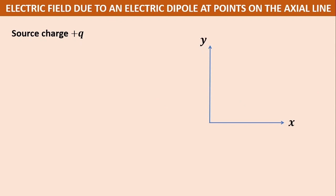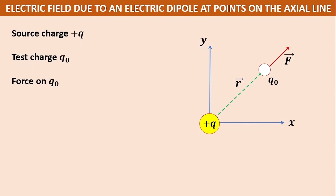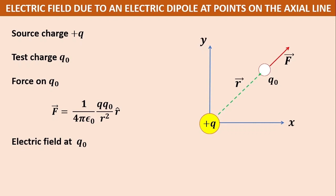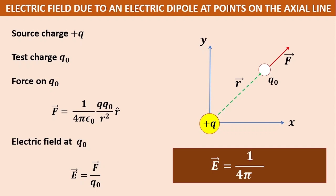The first one: the source charge q which creates the electric field. Then another one, the test charge q0. They are separated by a distance r vector, and q0 experiences a force f vector. The force on q0 is f vector equals 1 by 4 pi epsilon 0, q q0 by r square. The electric field at q0: e vector equals f vector by q0, which leads to the important formula e vector equals 1 by 4 pi epsilon 0, q by r square, r cap. We are going to use this formula in this topic.